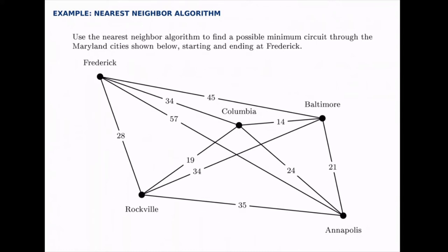Use the nearest neighbor algorithm to find a possible minimum circuit through the cities shown below in the state of Maryland, starting and ending at Frederick. We're going to start in Frederick and come back and end there. The nearest neighbor algorithm says at each stage pick the shortest distance to go to a city that you haven't visited yet.